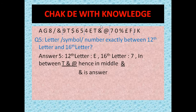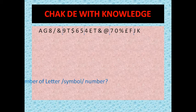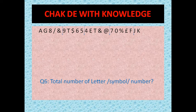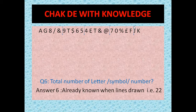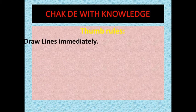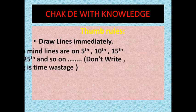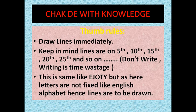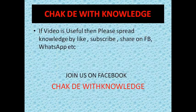You are not required to count the total number of letters, symbols, or numbers individually. You just need to be aware of the thumb rules — five, ten, fifteen, twenty, twenty-one, twenty-two. Apply the draw-line rule immediately. This is the thumb rule.